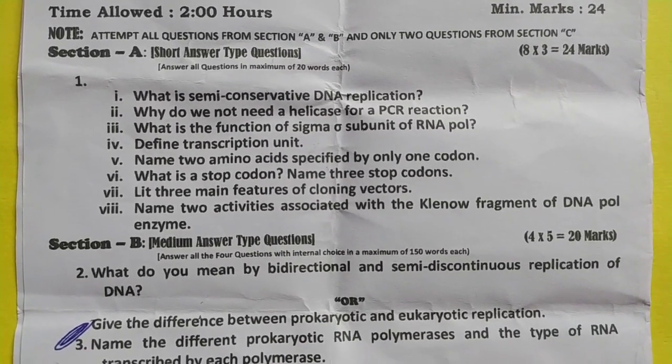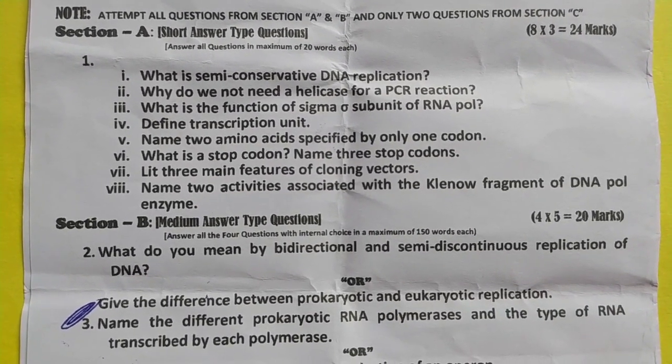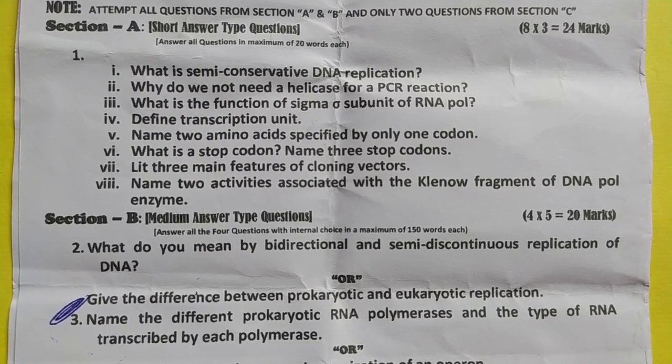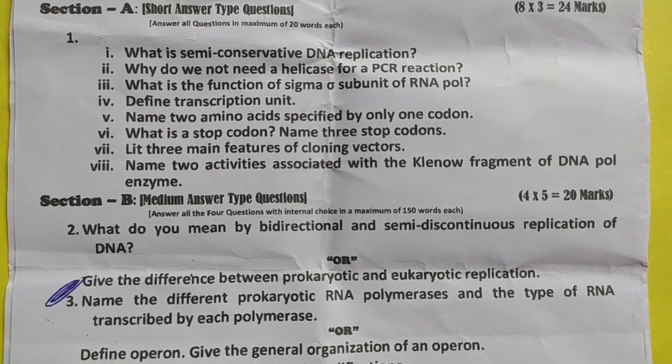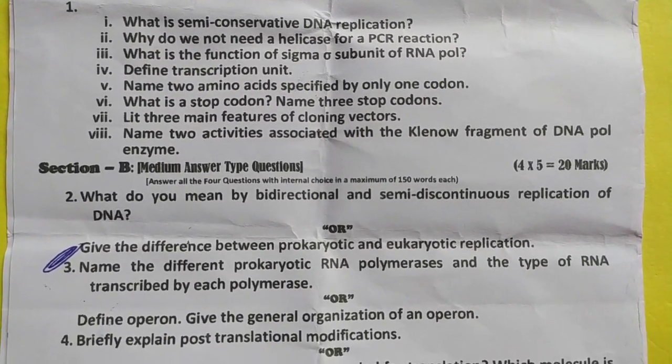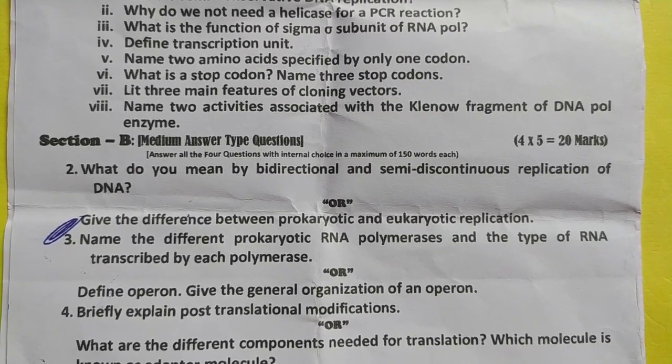What is a stop codon? Name three stop codons. List three main features of cloning vectors. Name two activities associated with the Klenow fragment of DNA polymerase enzyme.